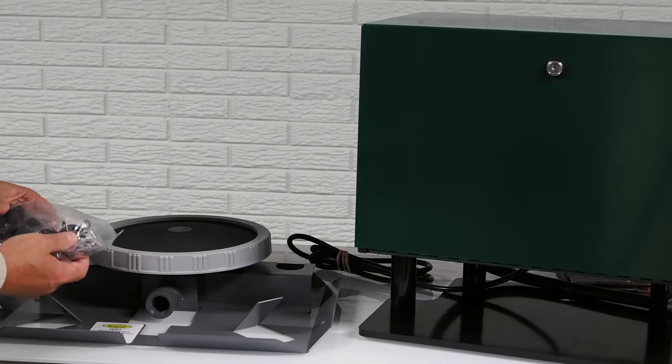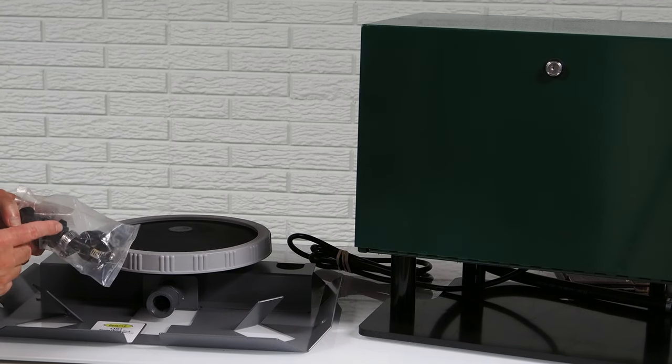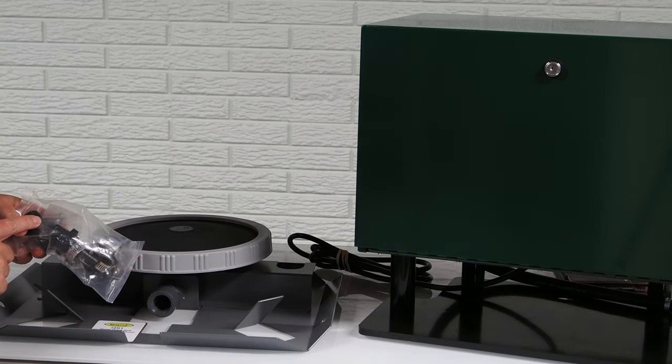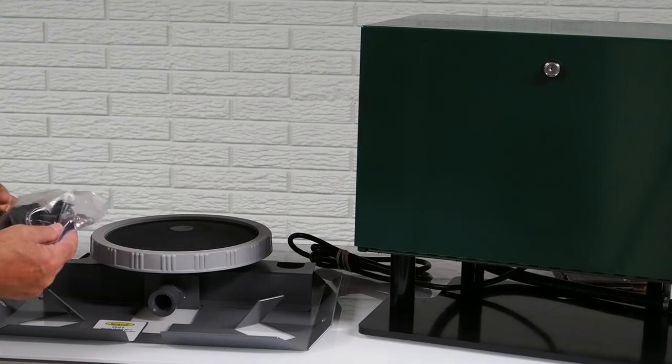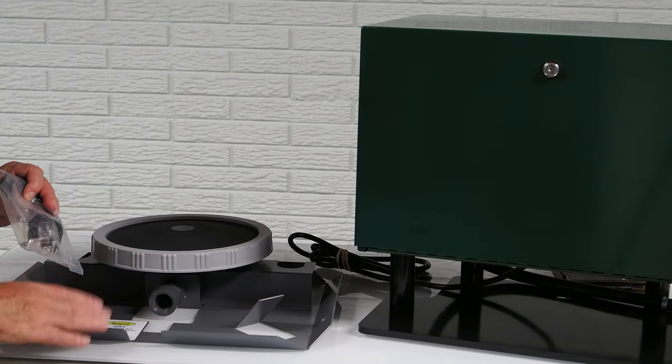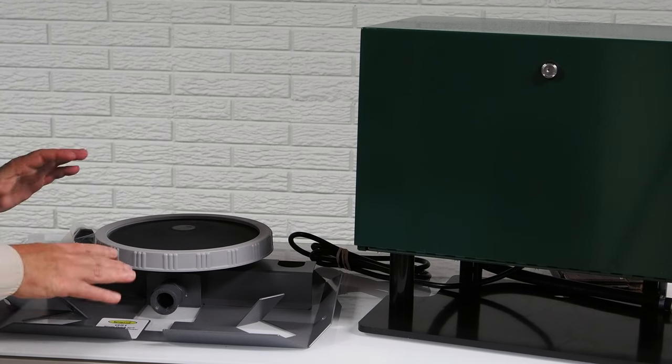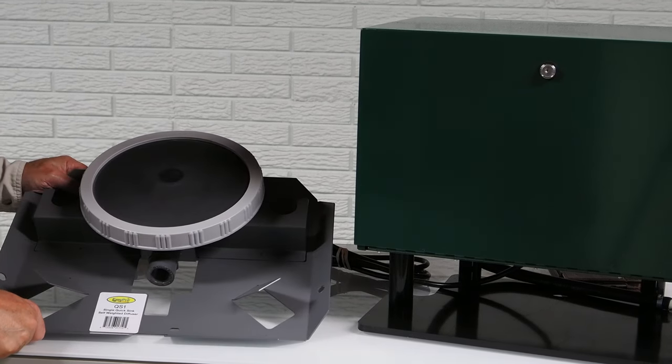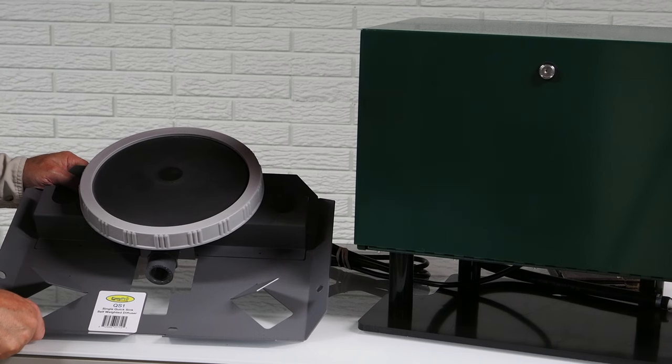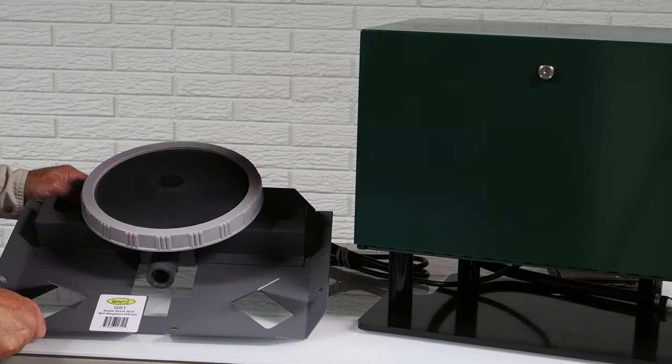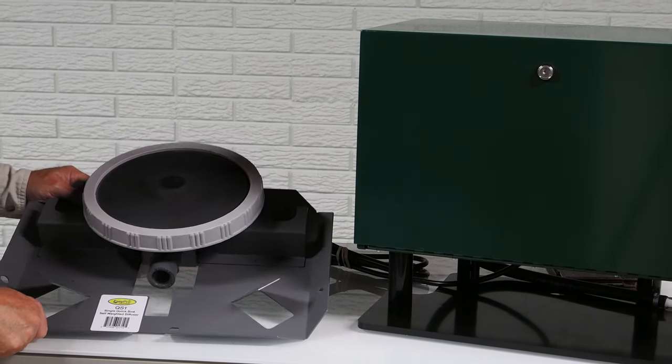It also comes with this attachment package where you have fittings for both 3/8 and 5/8 airline. The other thing that I like about these new diffusers is it comes with some brackets, support brackets, which when you set this up according to the instructions, you literally could remove this diffuser from the pond by pulling it with the airline. I don't generally recommend that, but you could do it.